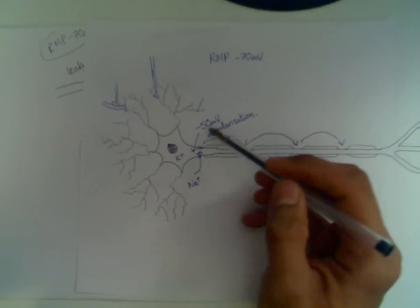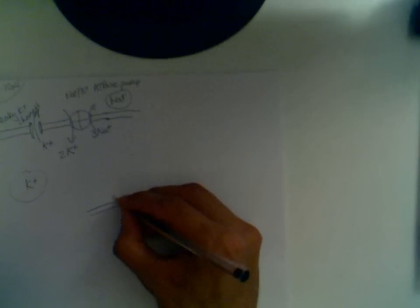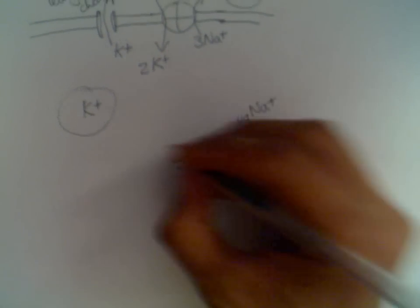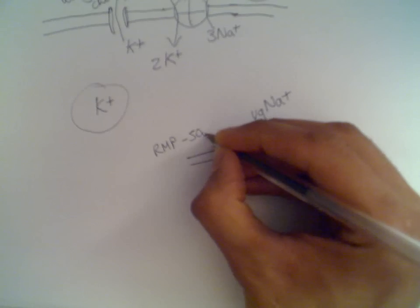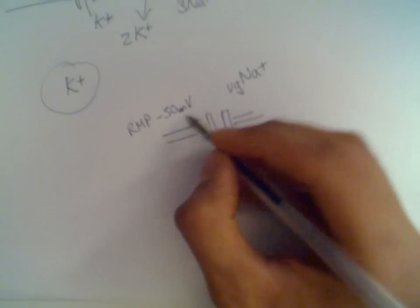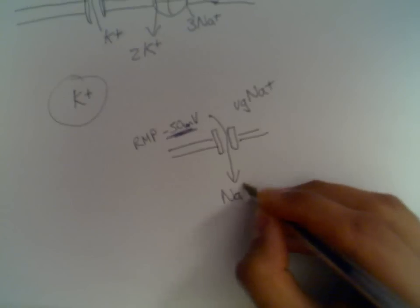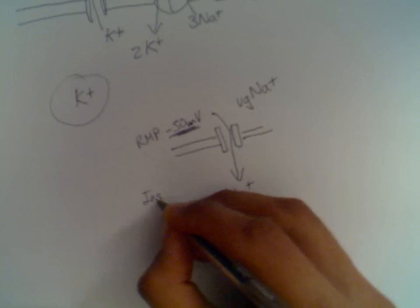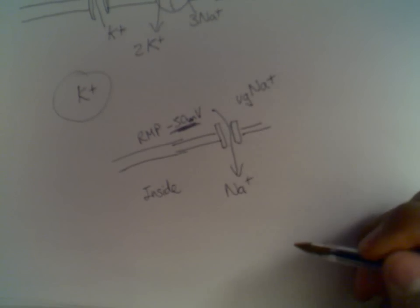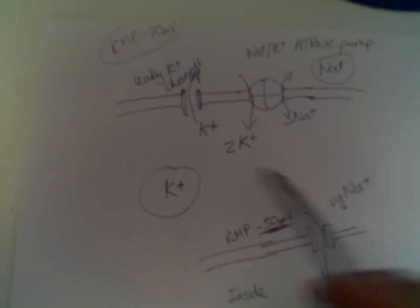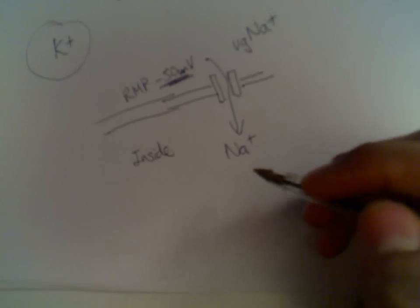Going back to the diagram we did before: our electrotonic potentials have come in, the summation has been over 50 millivolts, and this has caused a depolarisation. The way this works is there's a voltage-gated sodium channel. When resting membrane potential reaches around minus 50 millivolts, this channel is sensitive to that charge and opens. This allows a massive influx of sodium into the neuron. That's what causes depolarisation, because we're reversing what's normal — which is for potassium to be the major intracellular ion — by flooding the cell with sodium. And that's basically what an action potential is.